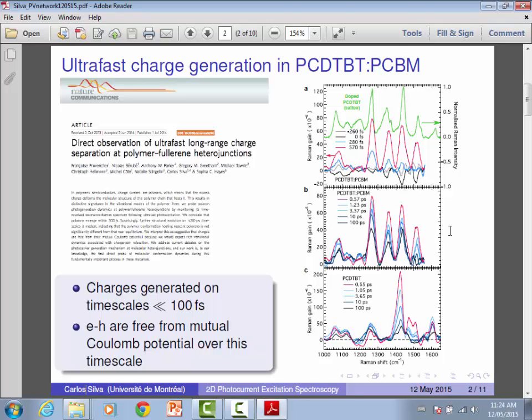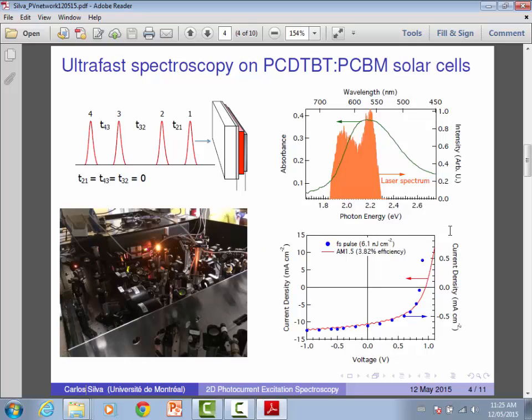So in order to answer these questions, we've been working hard at developing a technique which we really believe is a future direction, certainly in our group and we hope in collaboration coming out of this network, a technique that probes with great detail the mechanism of early time photocarrier generation dynamics. We're going to probe ultra-fast charge generation dynamics in organic photovoltaics, but this is extendable to other systems. I'm not going to have time to get into the details of the experiment, but I'm going to tell you what we're after and what we can measure with this technique.